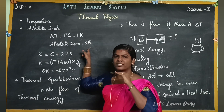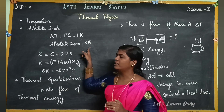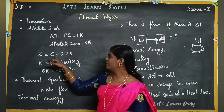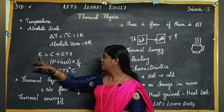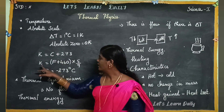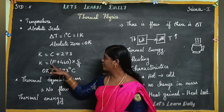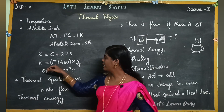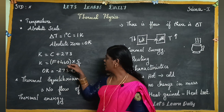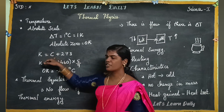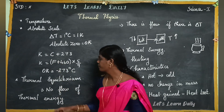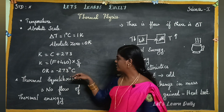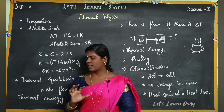We have three scales. The conversion is: Kelvin equals Celsius plus 273. Also, Kelvin equals Fahrenheit plus 460, multiplied by 5 over 9. So, 0 Kelvin is equal to minus 273 degrees Celsius. This is the absolute scale.